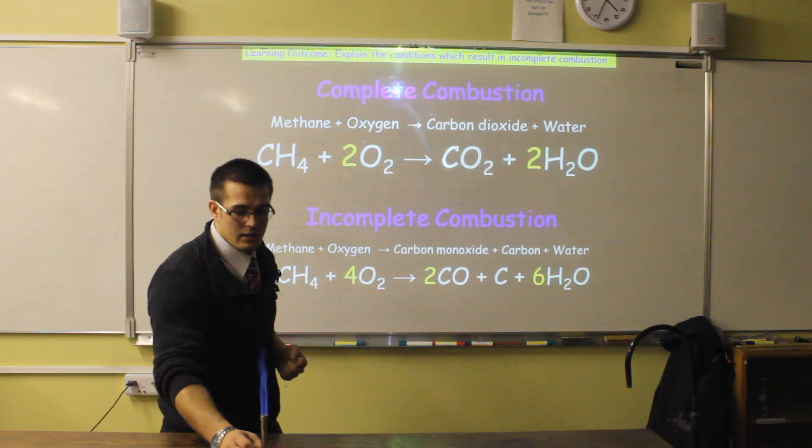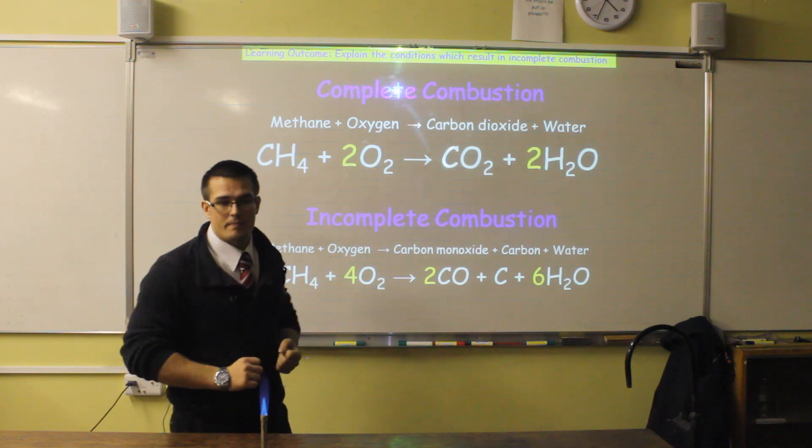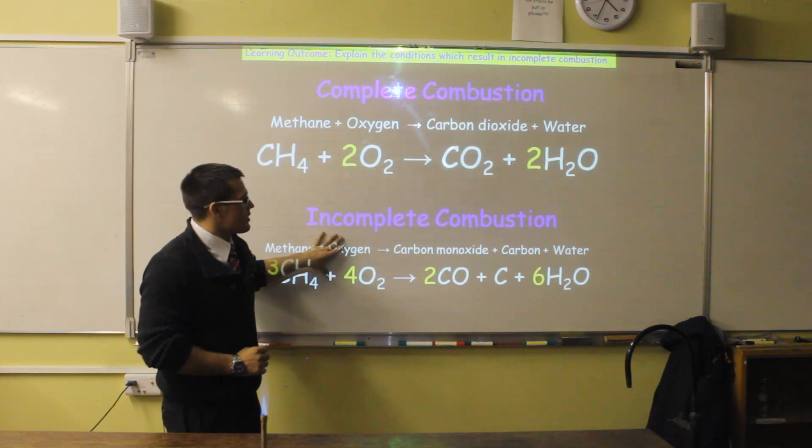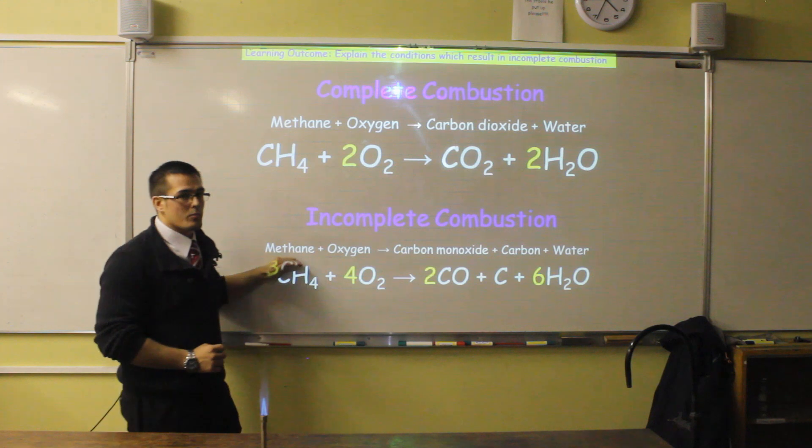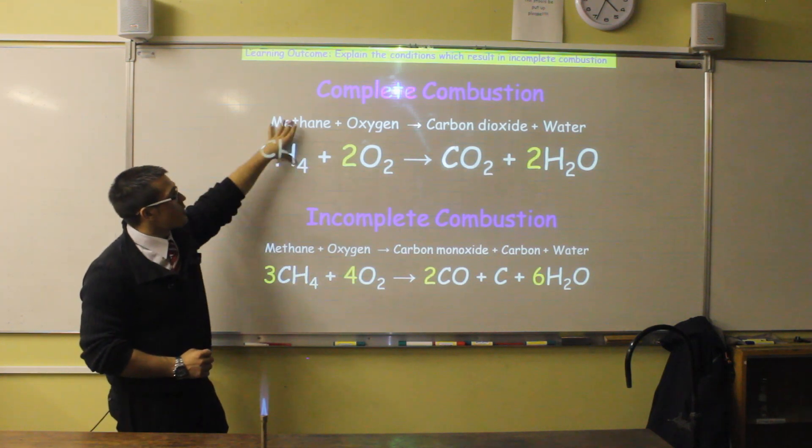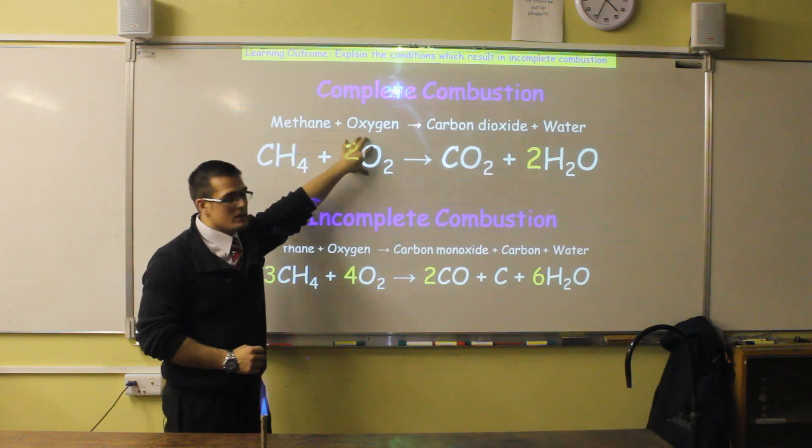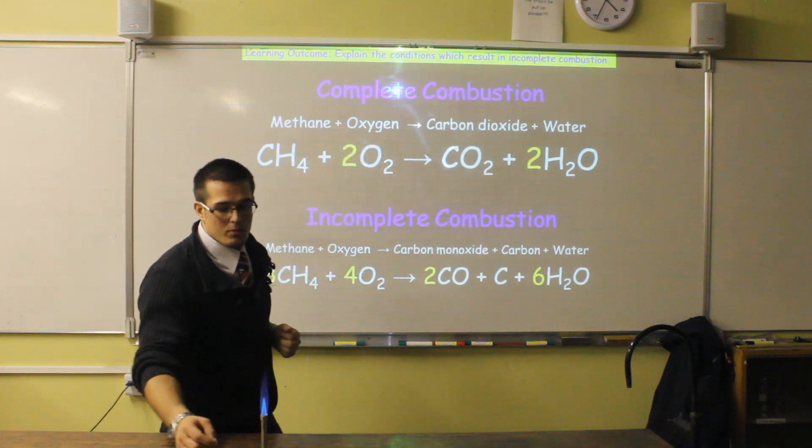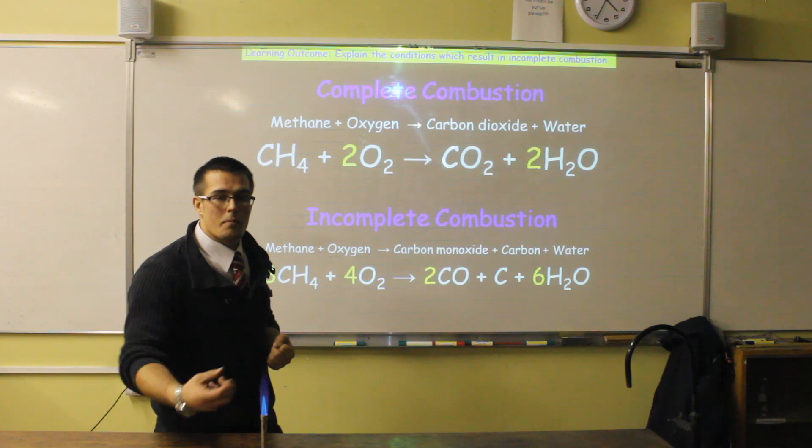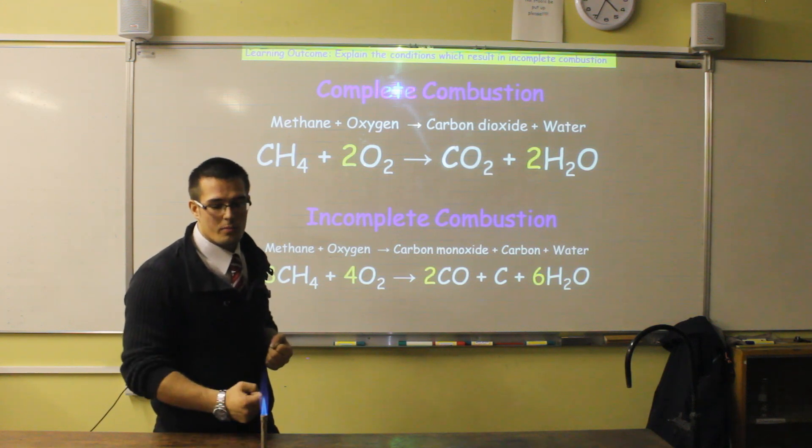So if I open the hole completely, we get our blue flame and then we get our roaring flame. We've started with the safety flame, which is an example of incomplete combustion, going through to complete combustion. The difference is because with complete combustion, I've opened the hole completely and now there's an excess of oxygen mixing with the methane gas before it burns.